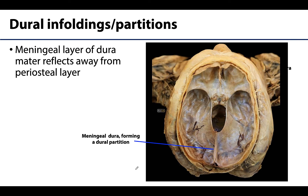Returning to the cranial dura mater, in certain areas that meningeal layer will reflect away from the periosteal dura, creating specializations of the meningeal dura referred to as dural infoldings — I often like to refer to them as dural partitions. These dural partitions often house dural venous sinuses, which we'll talk about in greater detail in the dural venous sinus lecture. These partitions, or dural septa, between certain parts of the brain will really help to support certain areas.